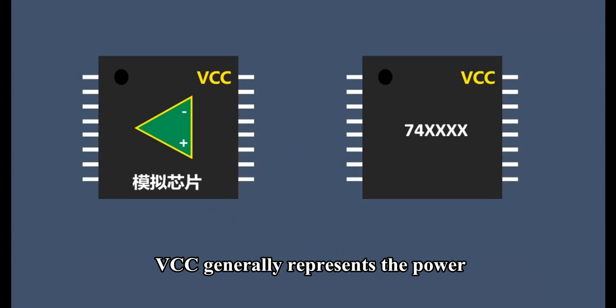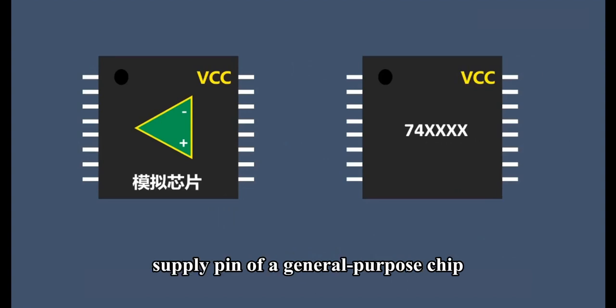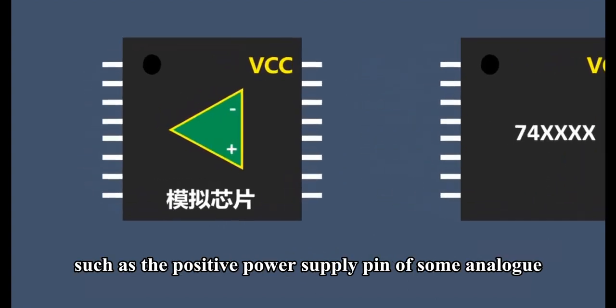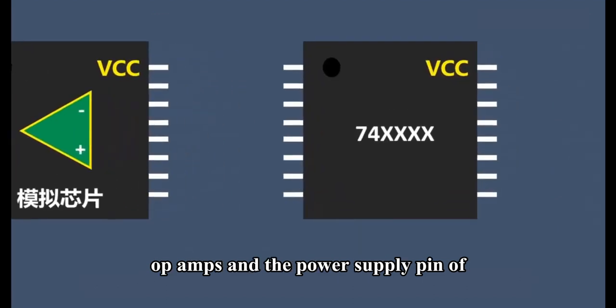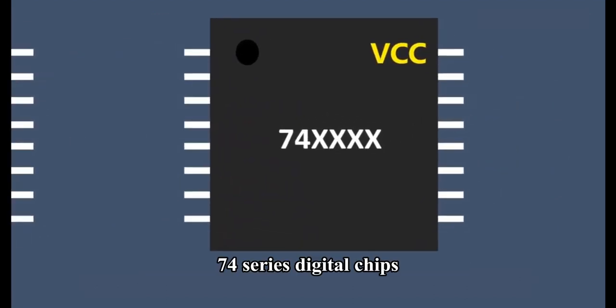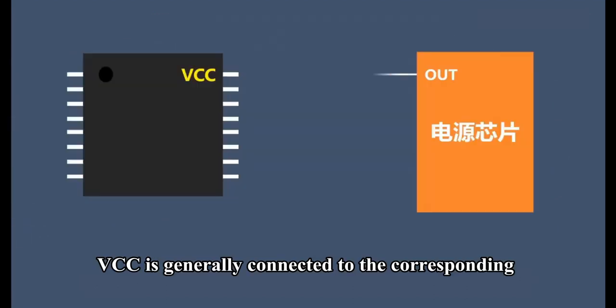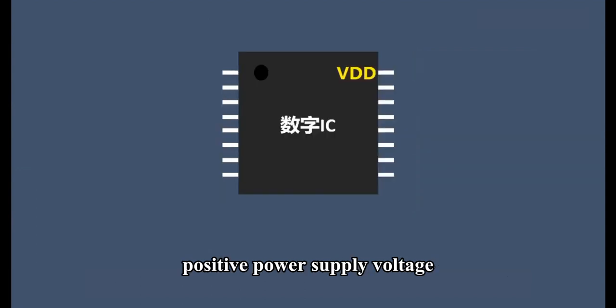VCC generally represents the power supply pin of a general-purpose chip, such as the positive power supply pin of some analog op-amps and the power supply pin of 74-series digital chips. VCC is generally connected to the corresponding positive power supply voltage.